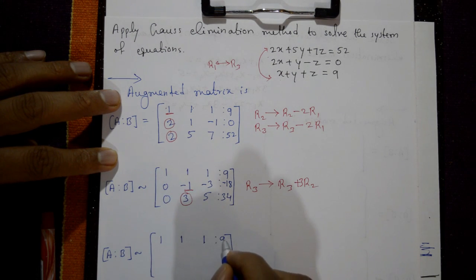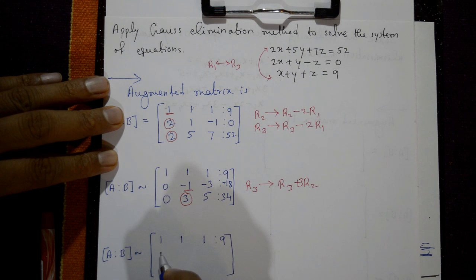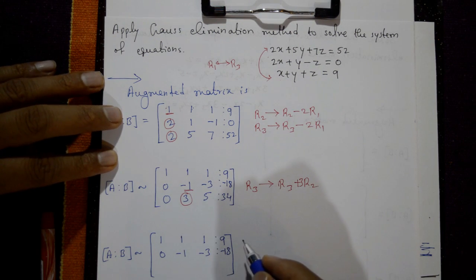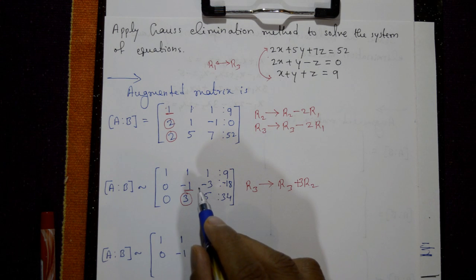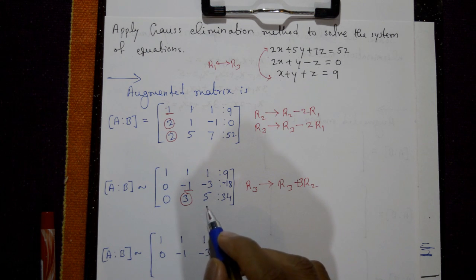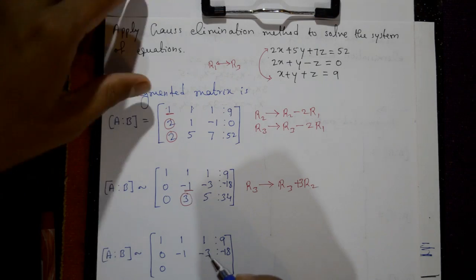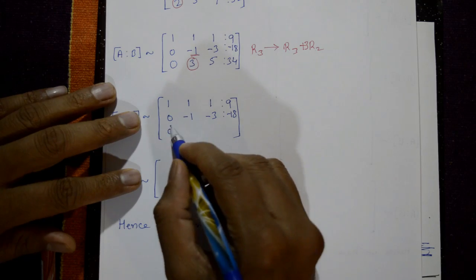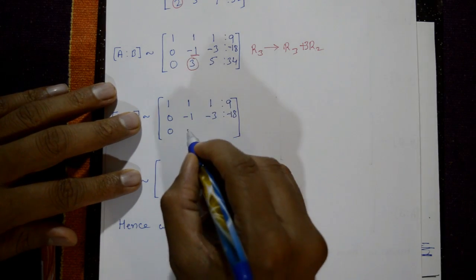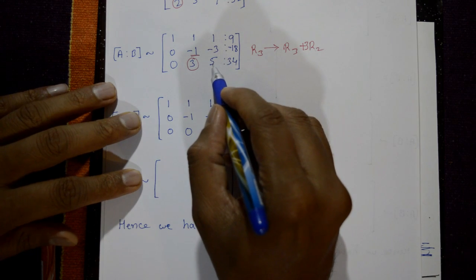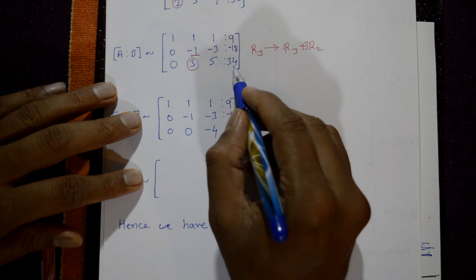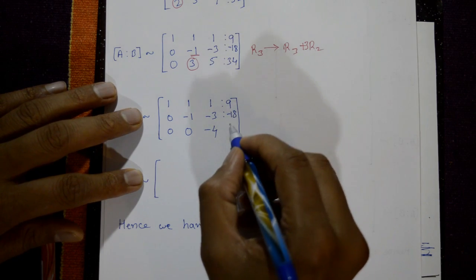The first two rows remain as they are: row 1 is 1 1 1 | 9, and row 2 is 0 -1 -3 | -18. For the third row, multiplying R2 by 3 and adding: the first two elements become 0, then 0 minus 3 plus 3 is 0, and minus 9 plus 5 is -4, and 3 times -18 plus 34 is -20.